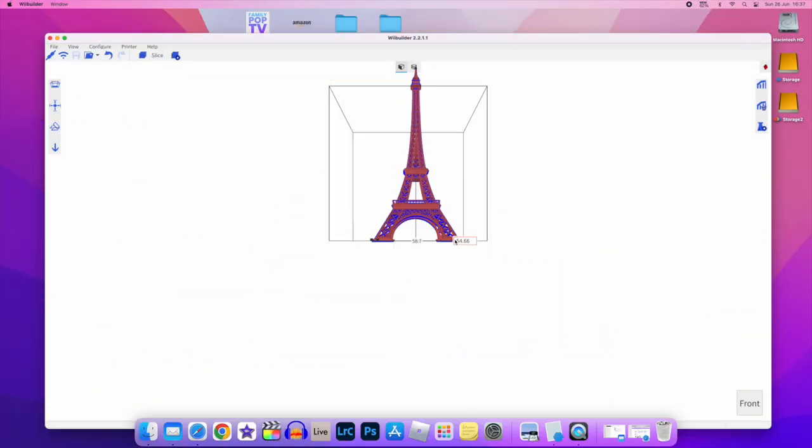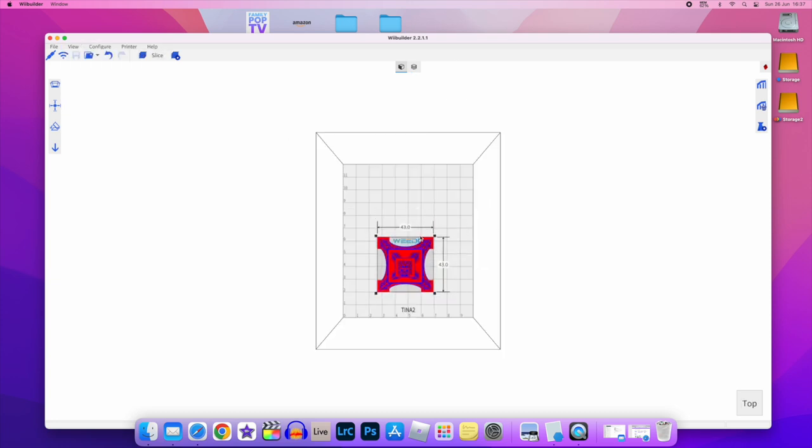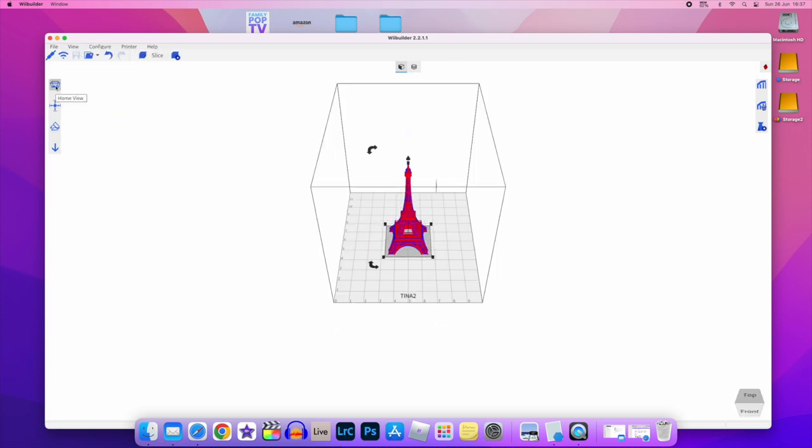I also tested a more complex model, which is an Eiffel Tower. I scaled it down massively just to see how the extruder of TINA2 would handle such tiny little lines and shapes.